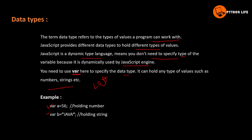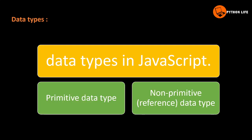For example, a variable can hold a number or a string. A `var` can store integer, string, and boolean values. There are two types of data types: primitive data types and non-primitive, also called reference data types.